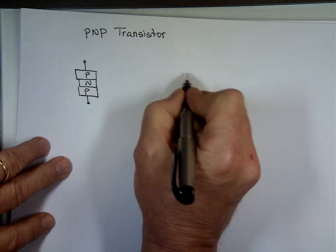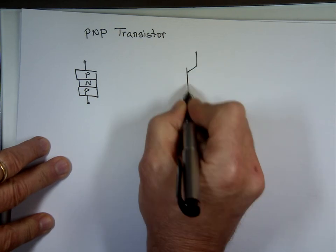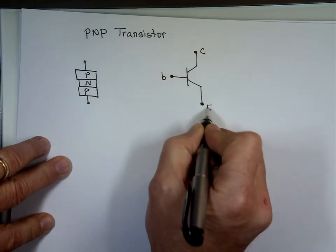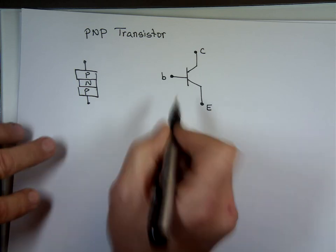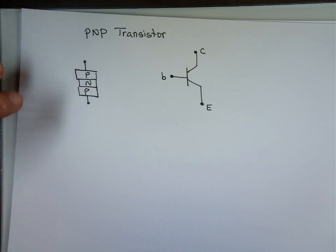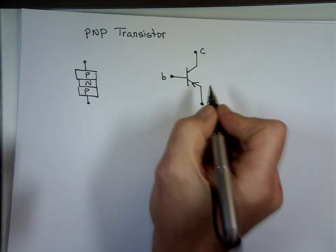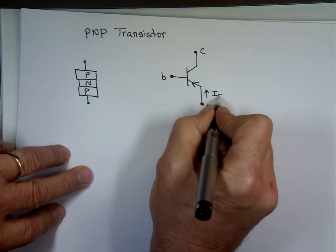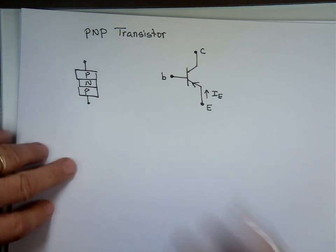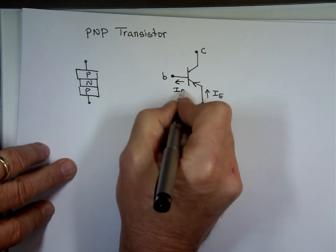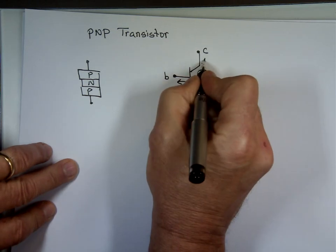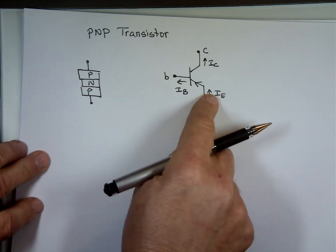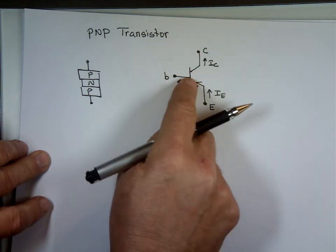The way you draw a PNP transistor is just like before — this is the base, this is the collector, this is the emitter. But now instead of the current coming out, we're going to make the current go into it. So the current goes in that direction. I_E is going in instead of coming out, I_B is coming out, and I_C is going up.